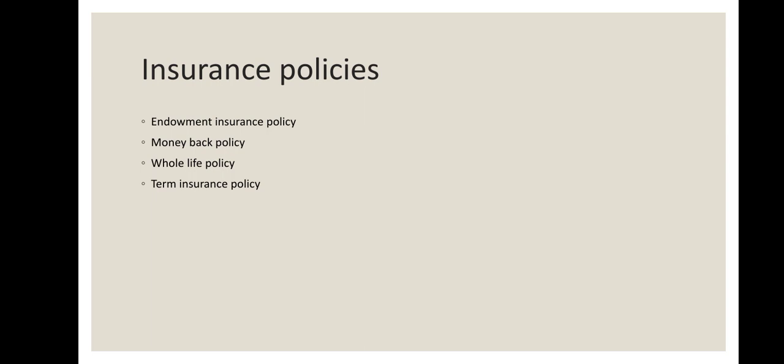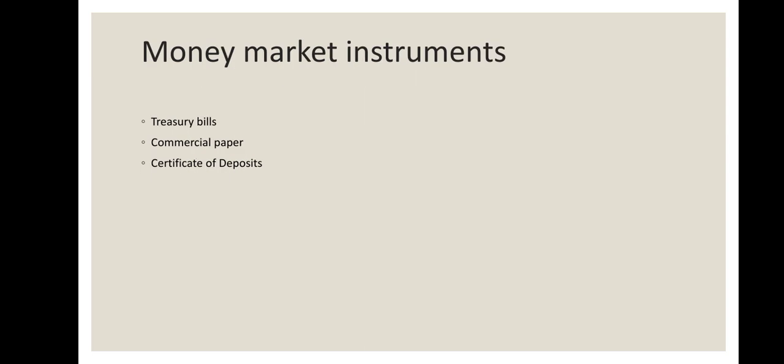Money market instruments are also one type of investment avenue, discussed in earlier classes. These include treasury bills, commercial papers, and certificates of deposit — various kinds of money market instruments, also called short-term investments. Treasury bills and commercial paper are introduced by RBI and are fixed for 91 days or 180 days, after which you get interest along with your principal.